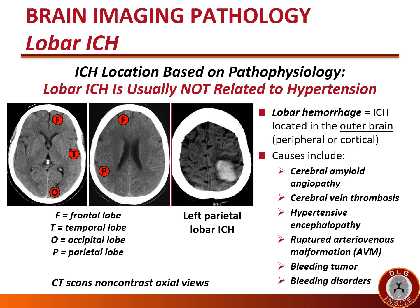Lobar intracerebral hemorrhages — hemorrhages located in the outer, peripheral, or cortical brain — are usually not related to hypertension. In the images, we see the possibility of hemorrhages in the frontal, temporal, occipital, and parietal lobes, with an actual left parietal lobar ICH seen on the far right image. The most common causes of lobar hemorrhages are cerebral amyloid angiopathy, cerebral vein thrombosis, hypertensive encephalopathy, ruptured arteriovenous malformations (AVMs), bleeding tumors, and bleeding disorders.